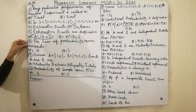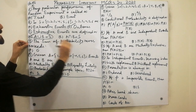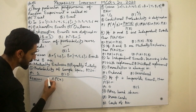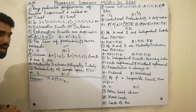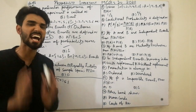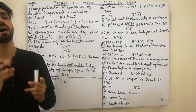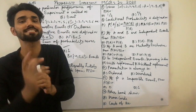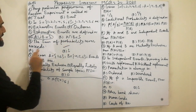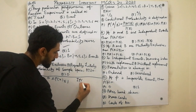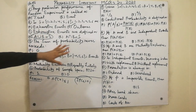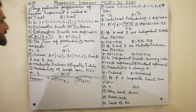MCQ number four is also very important: the sum of probability never exceeds one. We know that probability of X lies between 0 and 1. Probability can never be 2 or 3 — its value is always between 0 and 1. Must remember: the sum of probability always equals 1 and never exceeds 1.